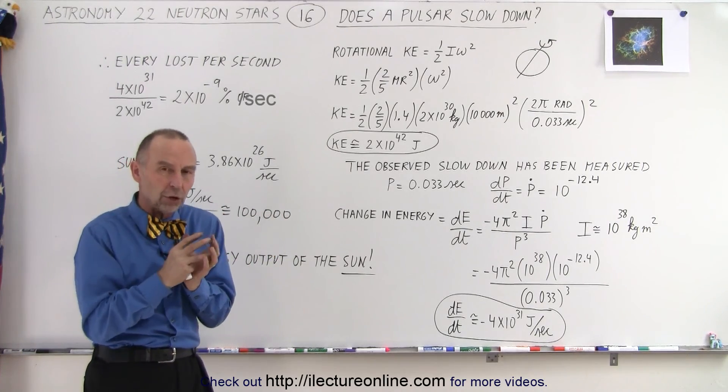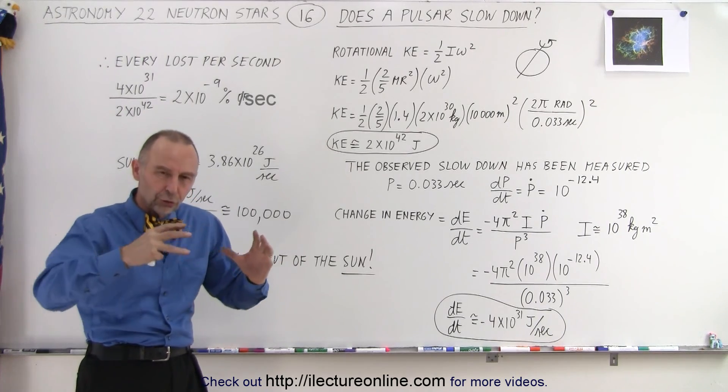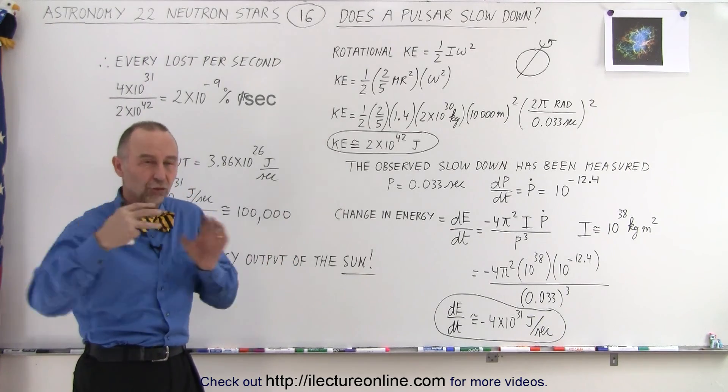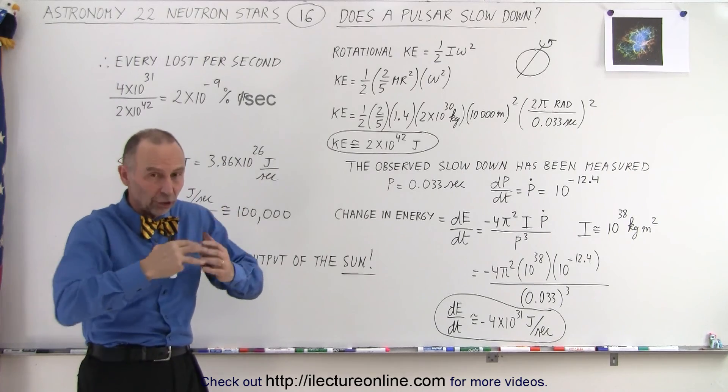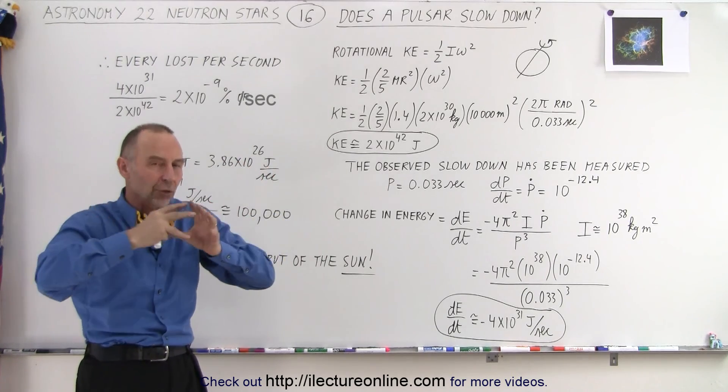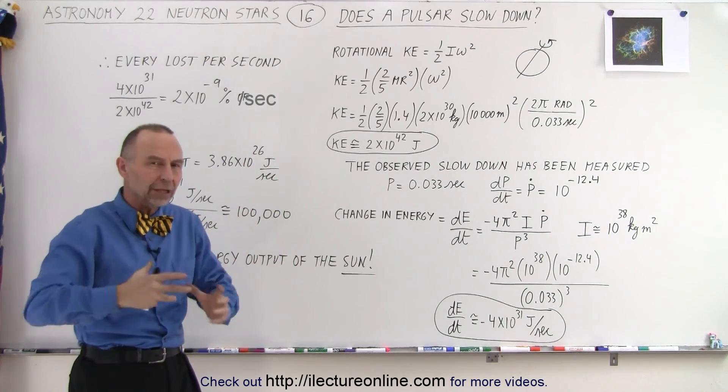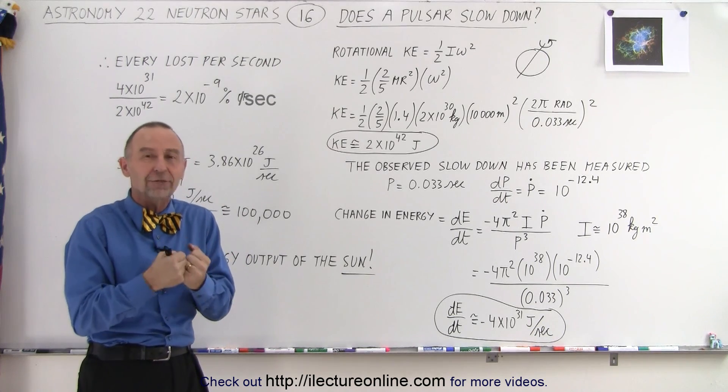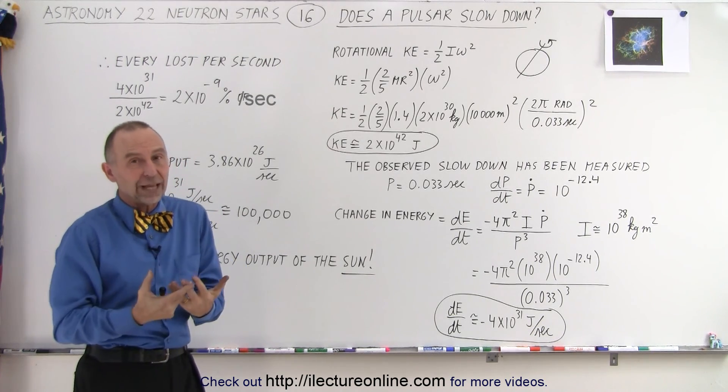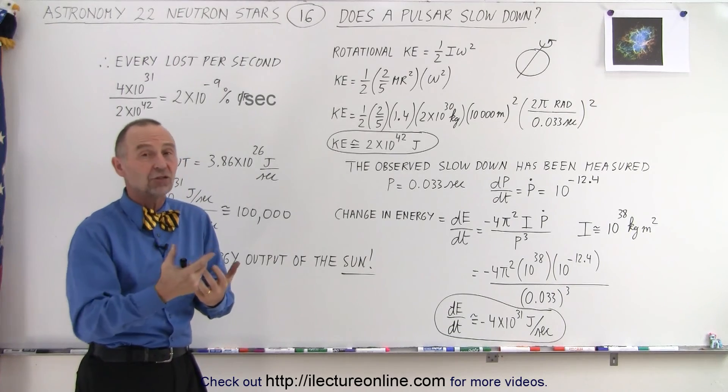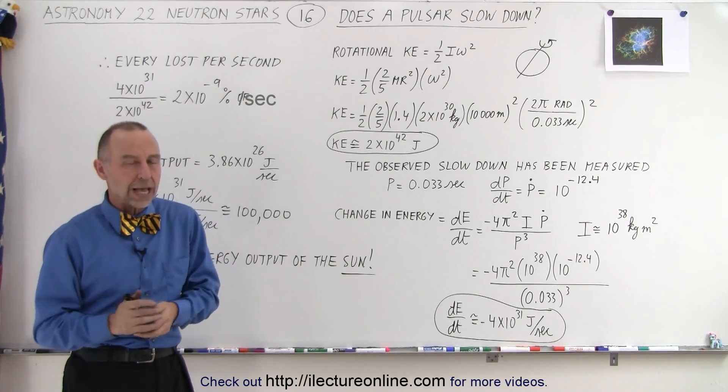We have what we call tidal forces. Those tidal forces cause the Earth to swell and shrink in the direction where the Moon is, not just the water to go up and down, but also the land. All that internal friction takes energy out of the Earth, and the Earth pays for that in terms of its rotational kinetic energy, which causes the Earth to slow down.